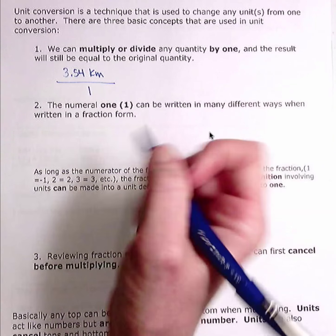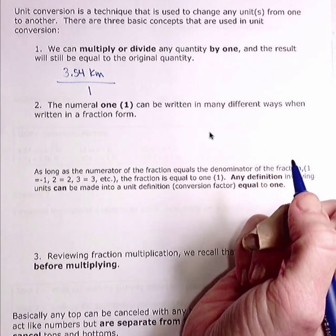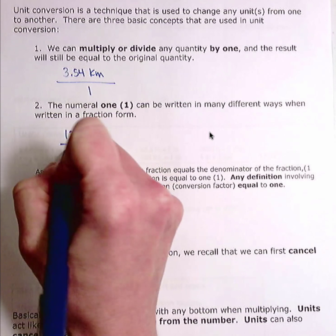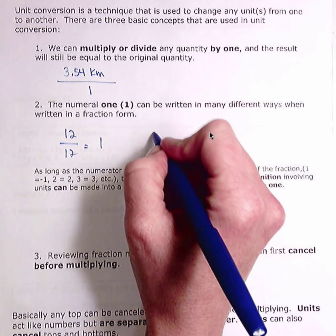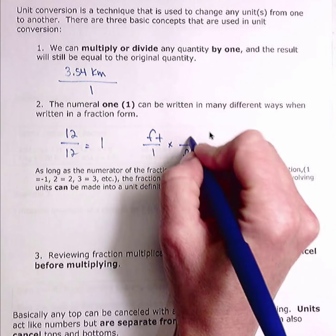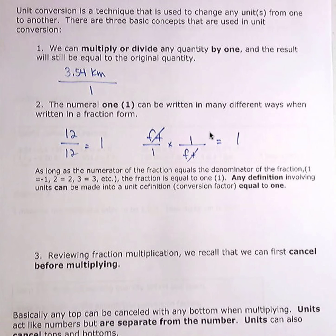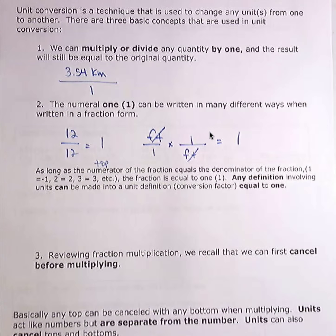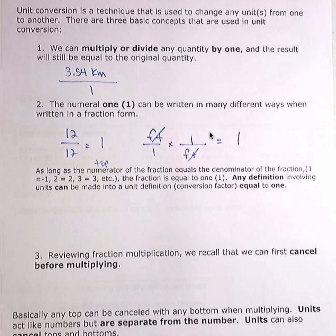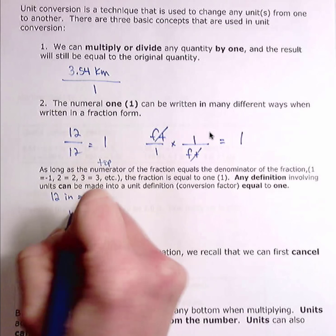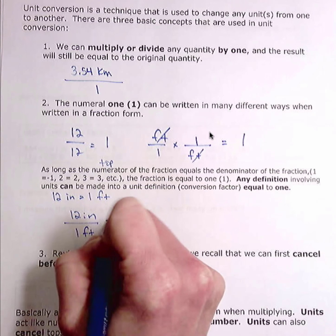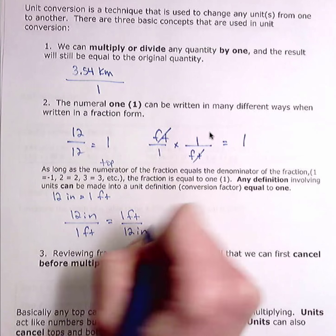The numeral 1 can be written many different ways in fraction form. You could have 12 over 12 — that's equal to 1. As long as the numerator equals the denominator, the fraction equals 1. Any definition involving units can be made into a conversion factor equal to 1. So if I have 12 inches equals 1 foot, then 12 inches over 1 foot — which is also equal to 1 foot over 12 inches — is equal to 1.